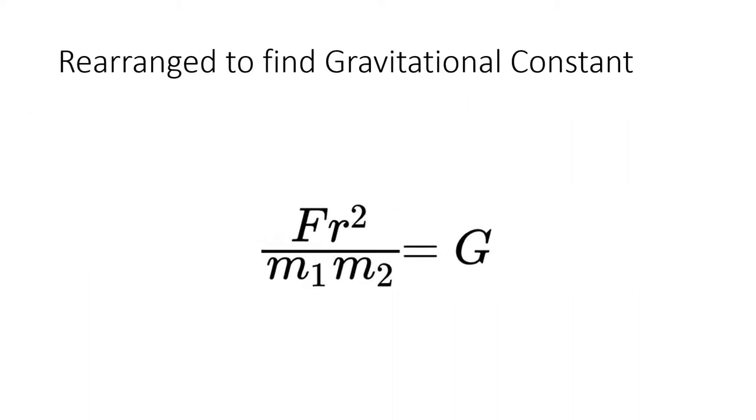Let us rearrange Newton's formula so we are solving for the gravitational constant. Why this is being done will become much clearer later. Before anyone complains, this is the same as taking 3 plus 5 equals 8 and turning that into 8 minus 3 equals 5.